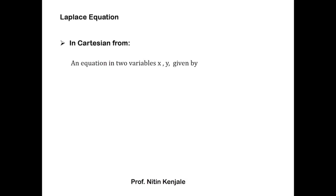The Laplace equation comes in two forms: Cartesian and polar. First we see what is the Cartesian form of the Laplace equation. It is an equation in two variables x and y, given by ∂²f/∂x² + ∂²f/∂y² = 0, where f is a function of two variables x and y. This equation is called the Laplace equation in two variables.